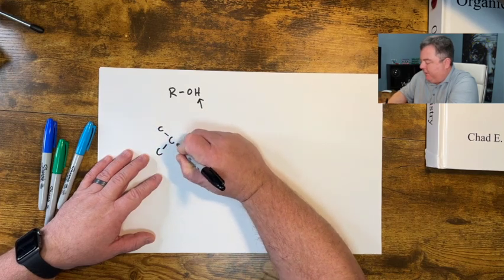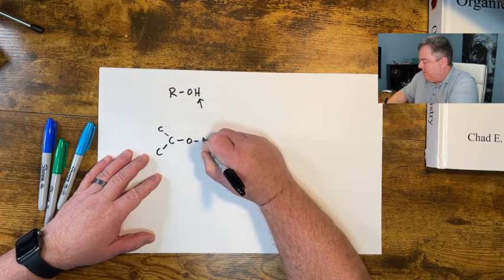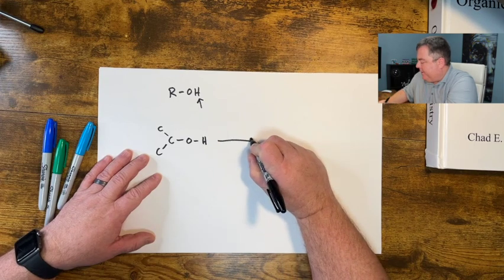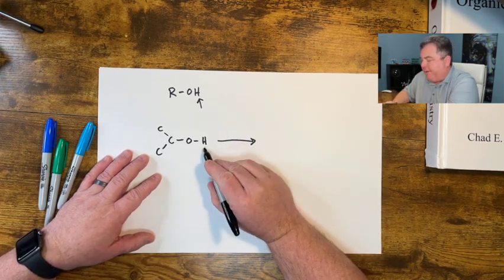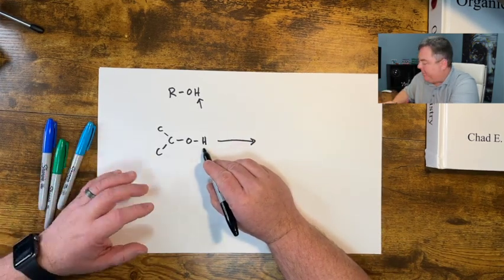So if you have an alcohol, let's pick isopropyl alcohol. We can pull off H plus with a very strong base.